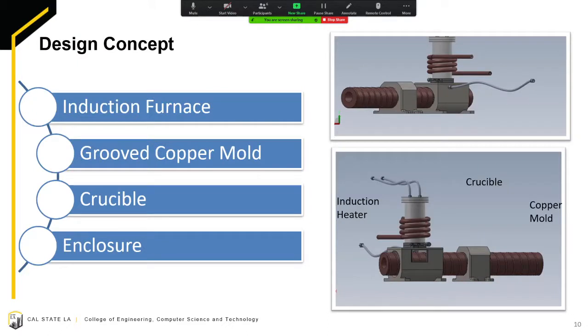In the beginning of the project, we were introduced to a design concept and some of the main components included the induction furnace, the grooved copper mold, the crucible, and then enclosure.